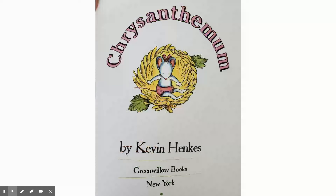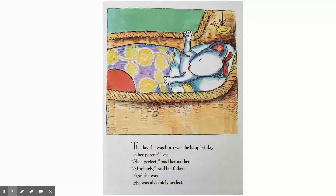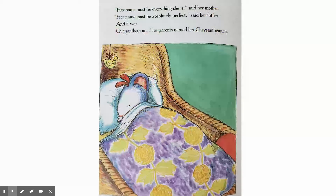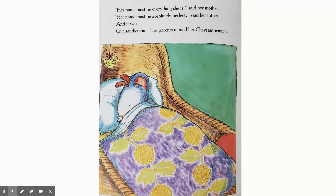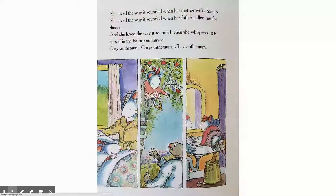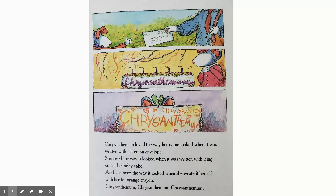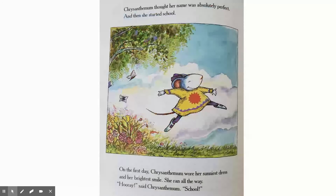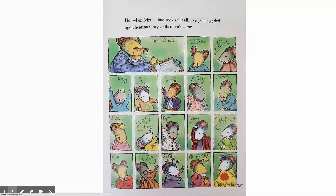So there is Chrysanthemum, and now I'm going to begin the summary. Chrysanthemum was born, and her mother and father loved her, and they named her Chrysanthemum. They thought it was a beautiful name. And growing up as a kid, she was a happy kid and she loved her name. She grew older and older, finally old enough to go to school, and she reaches the age of going to school for the first time. Off she goes — looks like she's happy to go to school.